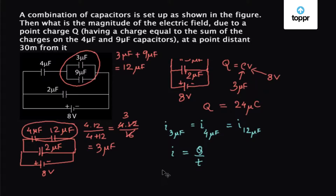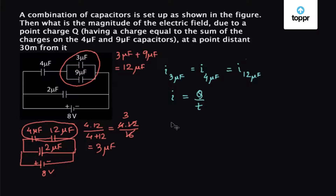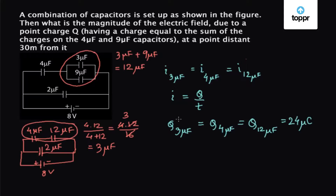So the charge on the 3 microfarad capacitor equals the charge on the 4 microfarad capacitor, which equals the charge on the 12 microfarad capacitor, which comes out to be 24 microcoulombs. Now we know the charge on the 4 microfarad capacitor. We have to find the charge on the 9 microfarad capacitor, so let's take this part of the circuit out. We have the 3 microfarad capacitor in parallel with the 9 microfarad capacitor, and this combination is equivalent to the 12 microfarad capacitor.